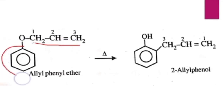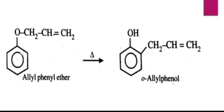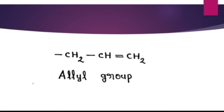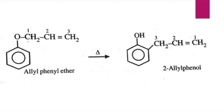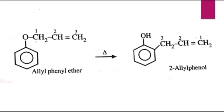This is the allyl part and this is the phenyl part. This is in the form of an ether (R-O-R'), and this allyl phenyl ether is converted to ortho allyl phenol. When allyl phenyl ether is heated to about 200 degrees Celsius in the absence of any catalyst, it undergoes Claisen rearrangement to form 2-allyl phenol.